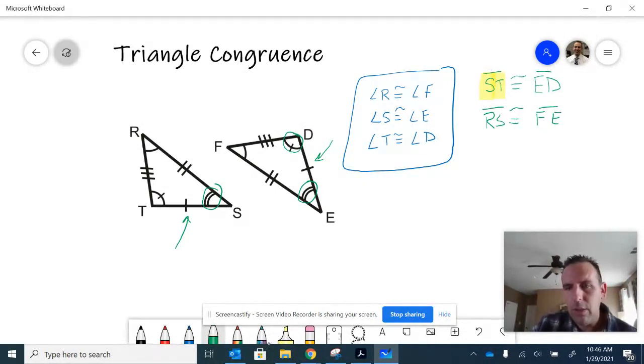And lastly, the side that has three marks, side segment R-T is going to be congruent to F-D. All right.